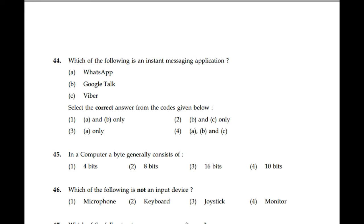Question number 44: Which of the following is an instant messaging application? WhatsApp, Google Talk, and Viber — all three are instant messaging applications. So A, B and C are correct; the 4th option is the correct answer. Question number 45: In a computer, a byte generally consists of 8 bits. So option 2 is the correct answer.